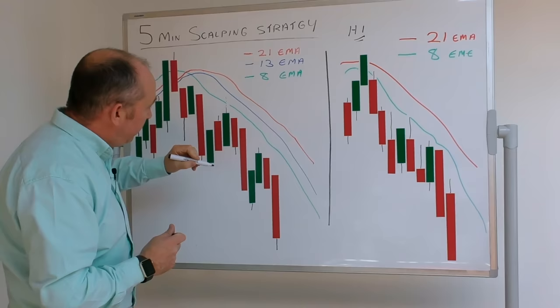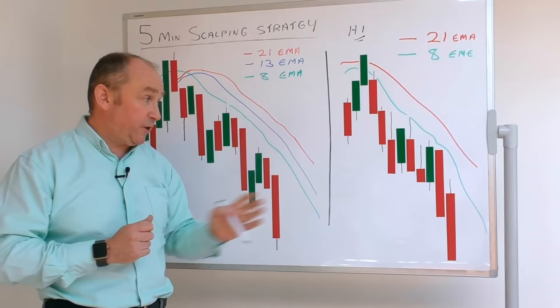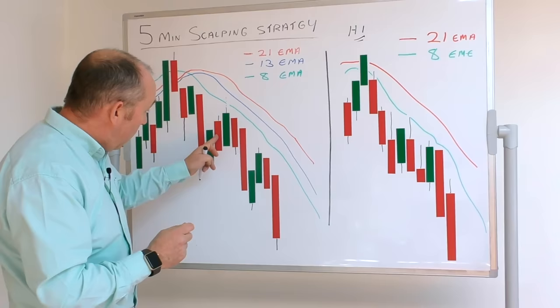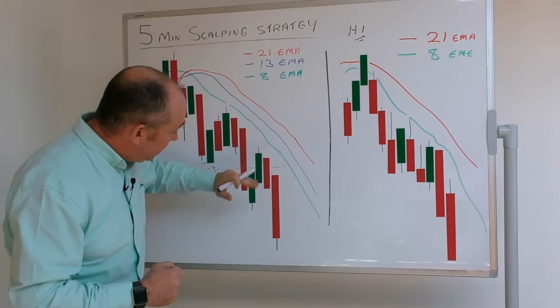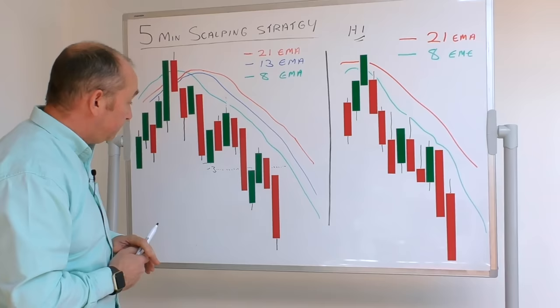So now we've got our trigger bar — price has touched the 8 moving average. We're looking to enter if it continues in the direction of the predominant trend. What we do is count back five candles and look for the lowest point of those five candles. The lowest candle is identified, we minus three pips, and that is going to be our entry. So if the market re-confirms the direction, we enter our short trade at three pips lower than the lowest of the five previous candles.